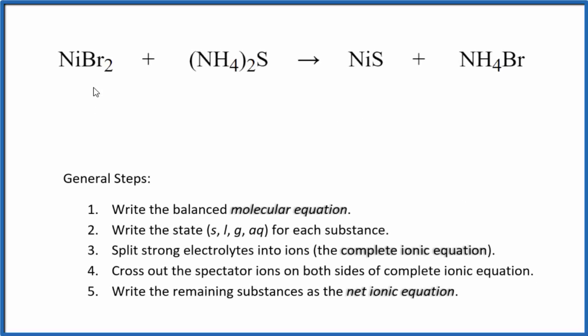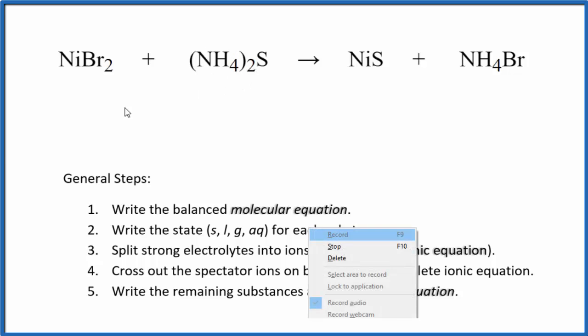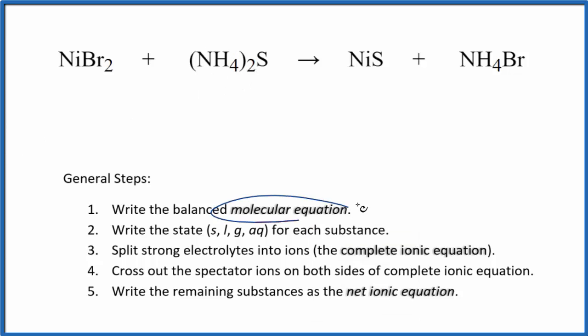In this video, we'll write the balanced net ionic equation for NiBr2 plus (NH4)2S. This is nickel-2-bromide, and this is ammonium sulfide. So the first thing we need to do is balance the molecular equation. This is the molecular equation.